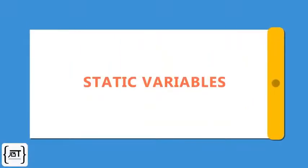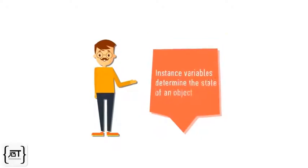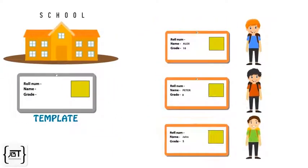In this video, we will learn about static variables. As we know, instance variables determine the state of an object. When a student joins school, an ID card is assigned to a student. The ID card is given a role number, and a role number belongs to an ID card object.